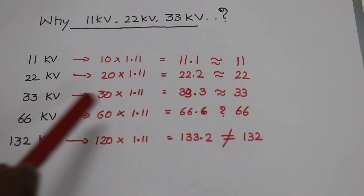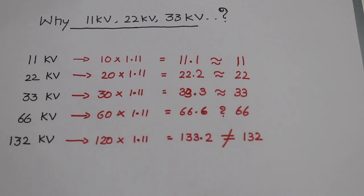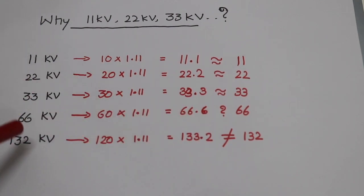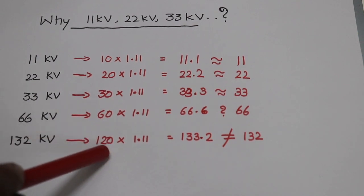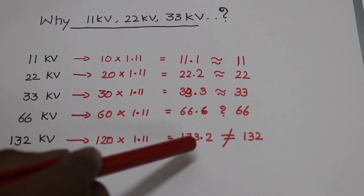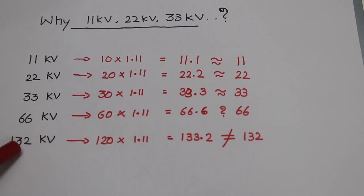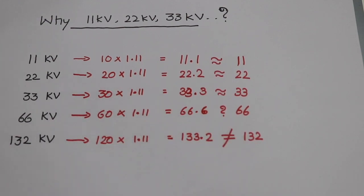If we have 60kV and we transmit with the form factor of 1.1, we get 133.2kV. If we transmit the volume of 132kV, it is equal to 133kV, which is approximately 132kV.